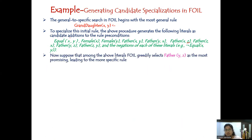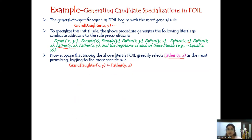Out of these candidate literals, the FOIL algorithm uses the gain with a greedy argmax approach — whichever literal gives the highest FOIL gain is selected. For example, let us assume father(Y, Z) is selected as the best specialization. This literal is then added to the preconditions of the rule.